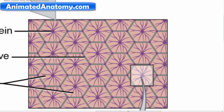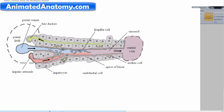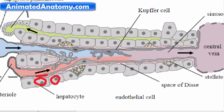In histology — the study of microscopic anatomy — there are two types of liver cells: parenchymal cells and non-parenchymal cells. 70–85% of liver volume is occupied by the parenchymal hepatocytes. The liver sinusoids are lined with two types of cells: sinusoidal endothelial cells and Kupffer cells. Between these hepatocytes and the endothelial sinusoidal cells there is a space called the perisinusoidal space.